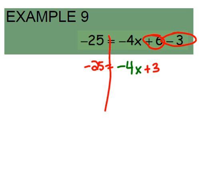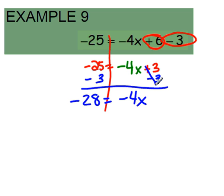Next we want to start by inversing the constant, so the constant on the right side of the variable is a positive 3, so we want to subtract 3 from both sides. This will leave us with a negative 28 equals a negative 4x.